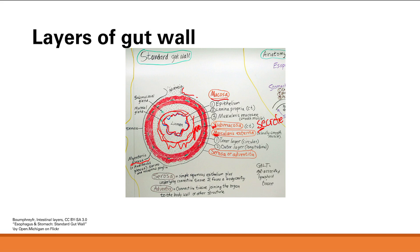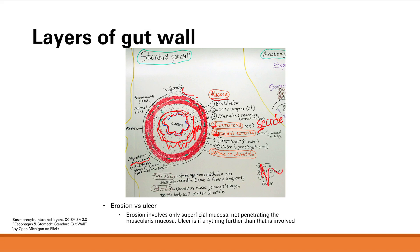Another key thing to note is the difference between an erosion and an ulcer. Both are damage to the layers of the gut wall. An erosion is damage that only involves the superficial mucosa — just damaging that much. If anything more is damaged — if you go deeper into the muscularis mucosa, submucosa, or muscularis externa — then you have an ulcer. So erosion is only very superficial damage, while an ulcer involves a little bit more deep damage.